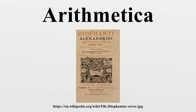Norbert Schappacher has written that the four missing books resurfaced around 1971 in the Astan Quds Library, enmeshed in a copy from 1198 AD. It was not catalogued under the name of Diophantos because the librarian was apparently not able to read the main line of the cover page, where Diophantos's name appears in geometric Kufi calligraphy.